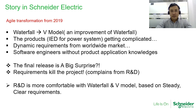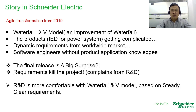At Schneider, we started the Agile transformation from the beginning of 2019. Before that, we mainly applied the waterfall model and the V-model. Our products are mainly intelligent electronic devices for power systems, and our product features are getting more and more complicated, while we receive dynamic requirements from the worldwide market, and sometimes the requirements are not so clear.